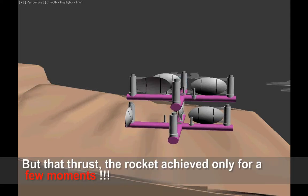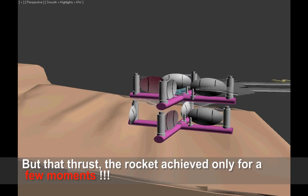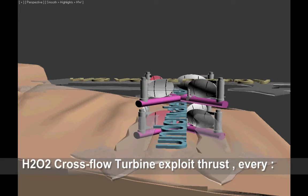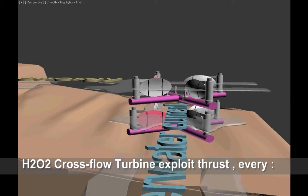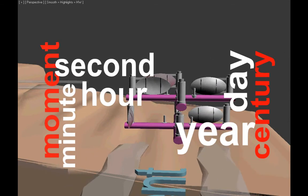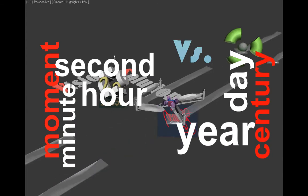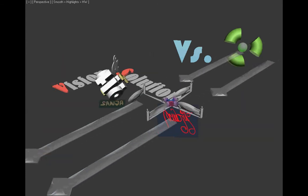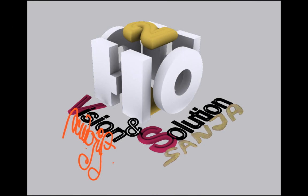But that thrust, the rocket achieved only for a few moments. H-202 cross flow turbine exploits thrust every moment, second, minute, hour, day, year, century. Continuous.